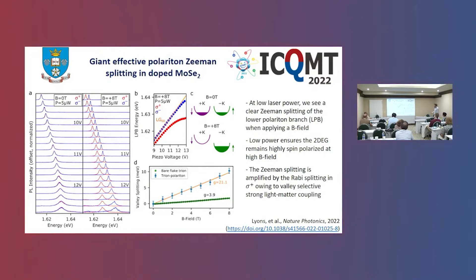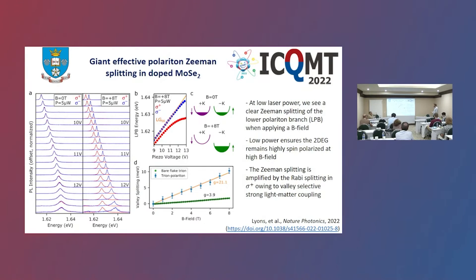This opens up a very large Zeeman splitting between the two LPB modes. Plotting the valley Zeeman splitting as a function of magnetic field — in the bare flake versus our trion polariton — the bare flake has a valley splitting G-factor of about four, as expected. For a polariton mode you would expect it to be halved because you are half cavity, half excitonic. However, because of this spin-selective strong coupling, we actually see an increase in our G-factor of about five times.